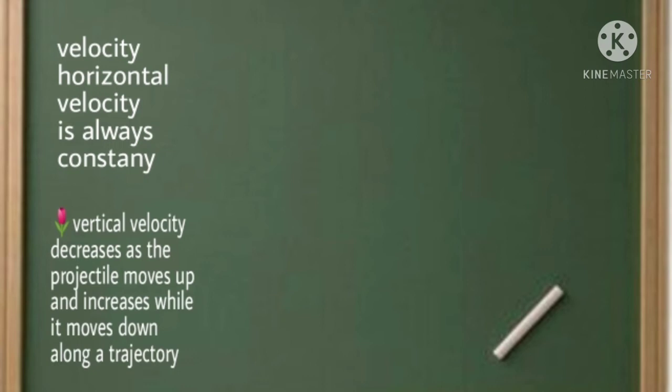In velocity, horizontal velocity is always constant. Vertical velocity decreases as the projectile moves up and increases while it moves down along a trajectory.